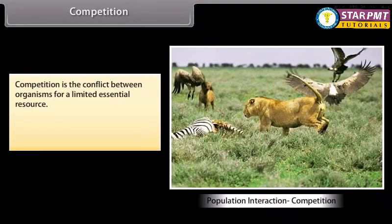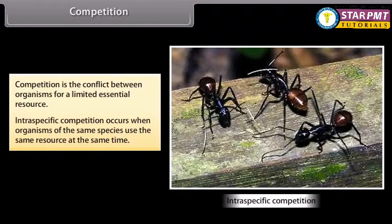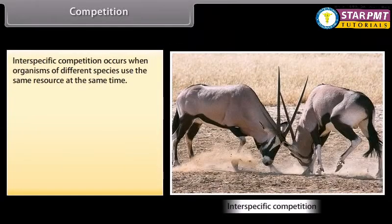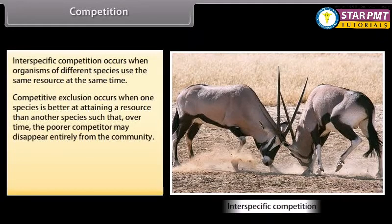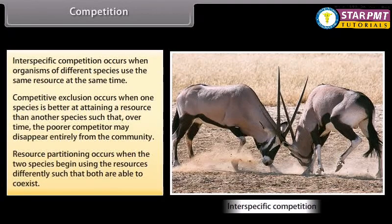Competition is the conflict between organisms for a limited essential resource. Intraspecific competition occurs when organisms of the same species use the same resource at the same time. Interspecific competition occurs when organisms of different species use the same resource at the same time. Competitive exclusion occurs when one species is better at attaining a resource such that over time the poorer competitor may disappear entirely from the community. Resource partitioning occurs when two species begin using resources differently such that both are able to coexist.